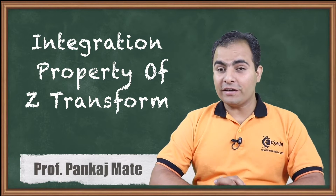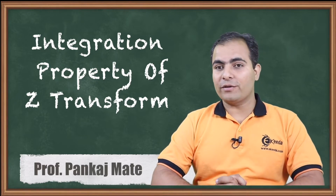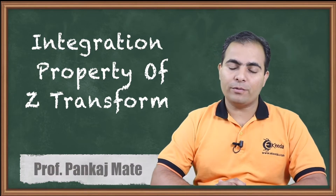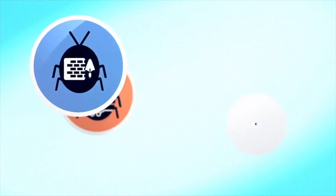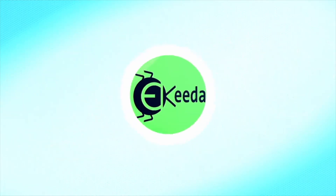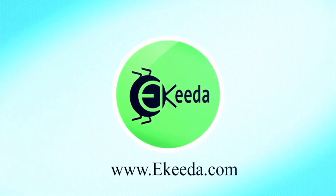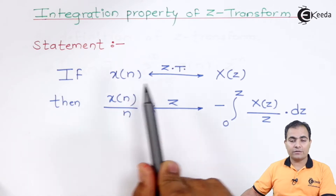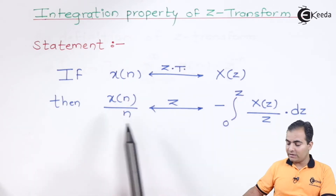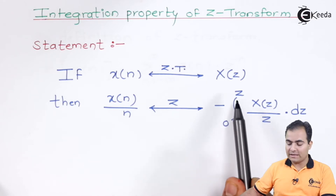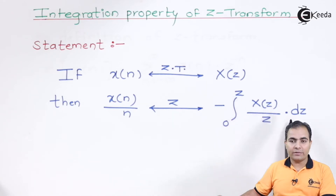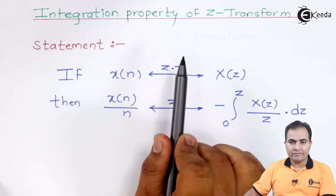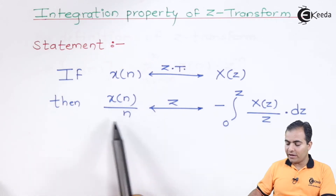We have studied the integration property in the time domain, but now we are going to study the integration property in the Z-domain. First let's see the statement and then we'll prove it. If X(N) has Z-transform X(Z), then X(N)/N has Z-transform equal to minus the integration from 0 to Z of X(Z)/Z with respect to dZ. This integration property is also referred to as division by N, which is why on the left hand side we have divided by N.